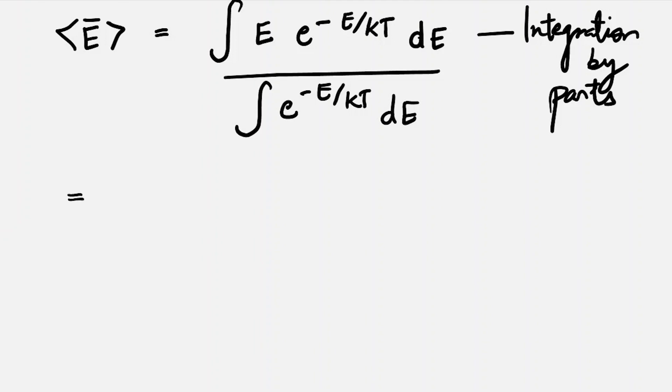This is going to be E, we are going to integrate it from zero to infinity. So E times the integration of the second function, that is e to the power minus E by kT, comes out to be minus kT. Putting the limits...